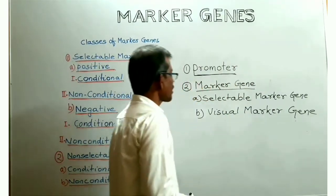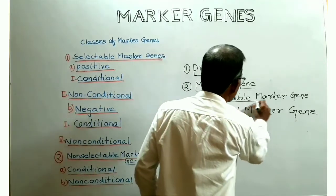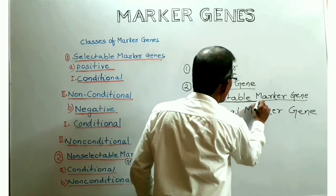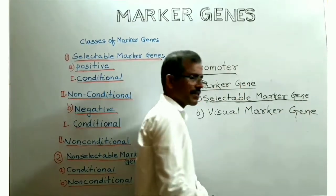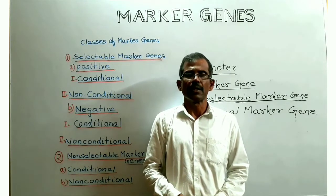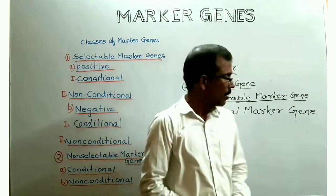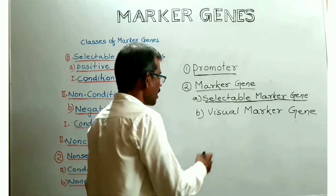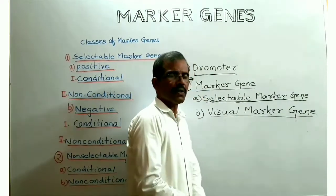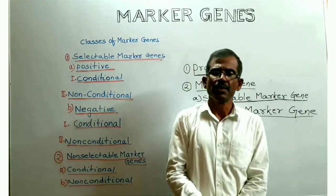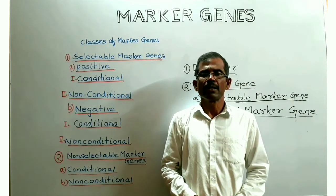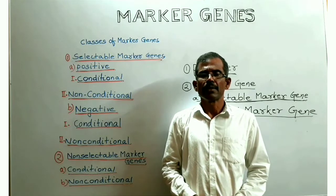Some marker genes are known as selectable marker genes. Selectable marker genes typically confer antibiotic resistance so that transgenic cells, tissues and plants can be selected on a suitable medium. Other marker genes are known as visual marker genes, which often cause a color change in the transgenic plant so that researchers can see where and when the gene is expressed in the plant tissue.